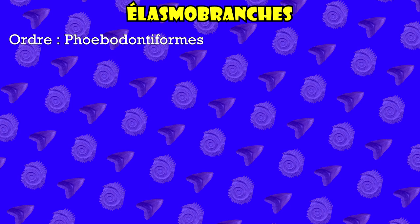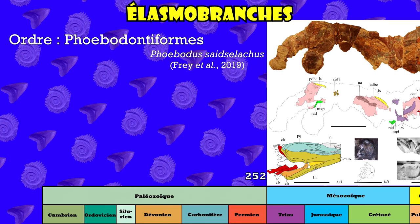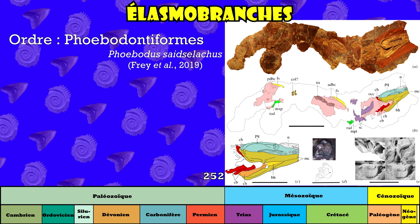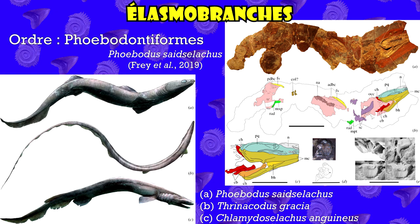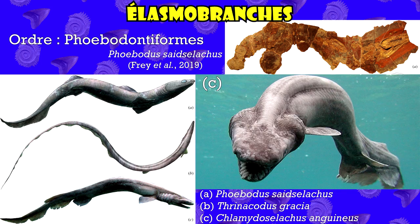Cet ordre n'était majoritairement connu qu'à travers des dents et des épines isolées, jusqu'à ce que des restes de squelettes soient découverts, étudiés et publiés fin 2019. Je vous présente donc l'espèce Phoebodus saidcelacus, provenant directement de dépôts marocains datés du Famennien. Les spécimens décrits dans l'article de Frey et al. de 2019 nous montrent un hélasmobranche possédant un corps anguilliforme, avec une mâchoire allongée, deux épines devant les deux nageoires dorsales. Cette morphologie fait beaucoup penser à celle du requin lézard, nous montrant un bel exemple de convergence évolutive, vu que plus d'une centaine de millions d'années séparent les derniers phébodontes des premiers requins lézards.